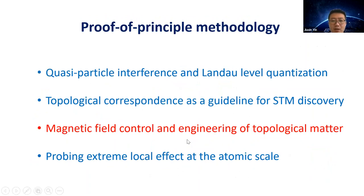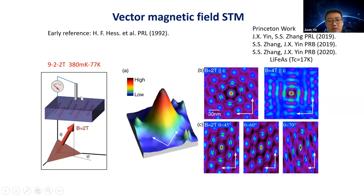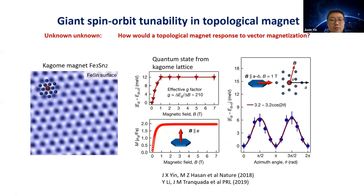A third methodology is using STM's magnetic field tunability to control and engineer topological matter — something photoemission cannot do as it cannot operate with a magnetic field. Early research in this direction focused on NbSe₂, where vector field STM was used to observe tilted vortices. We extended this technique to study correlated superconductor LiFeAs, finding that increasing c-axis field produces a hexagonal-to-square vortex lattice transition, and rotating the field toward in-plane directions produces elliptical distortion of the vortex lattice.